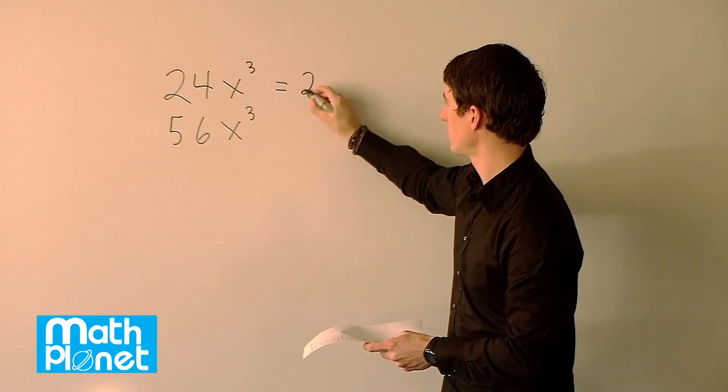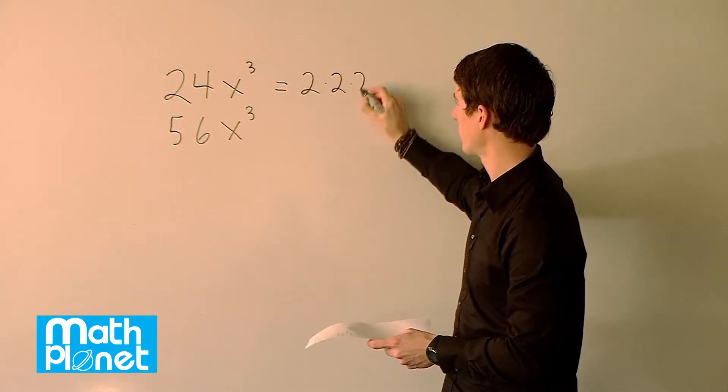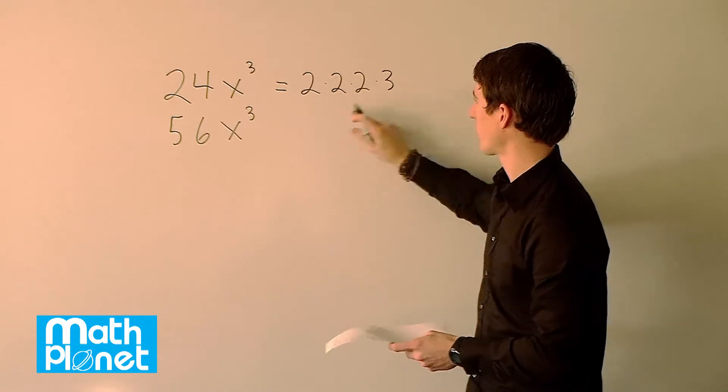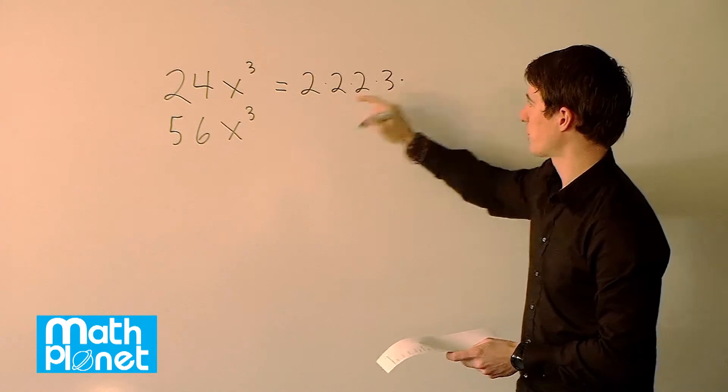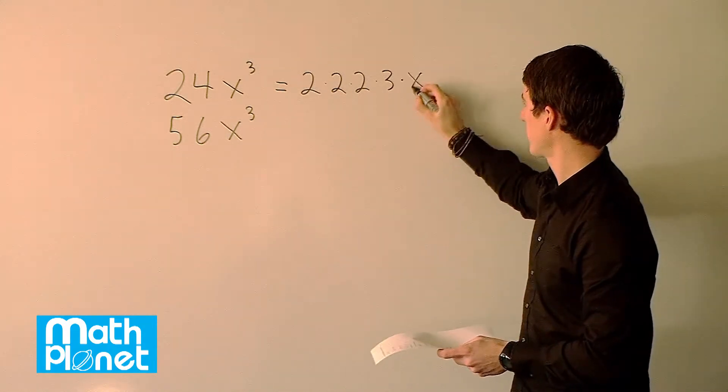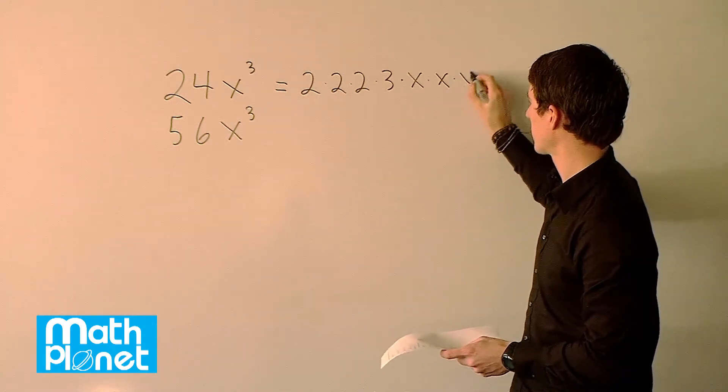So the 24 we can rewrite as 2 times 2 times 2 times 3, so that's 4, 8, 8 times 3 is 24. And then we have all three of these x's: x times x times x. Great.